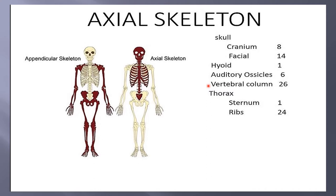The vertebral column has 26 bones: cervical 7, thoracic 12, lumbar 5, sacrum 5 (which is fused), and coccyx 4 (which is fused and attached to the sacrum). The thorax includes the sternum — one bone composed of manubrium and the xiphoid process — and ribs, which are 24.